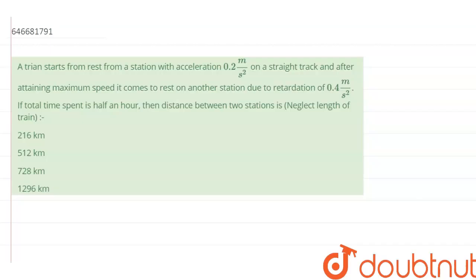A train starts from rest from a station with acceleration 0.2 meter per second square on a straight track. And after attaining maximum speed, it comes to rest on another station due to retardation of 0.4 meter per second square. If total time spent is half an hour, then distance between two stations is?